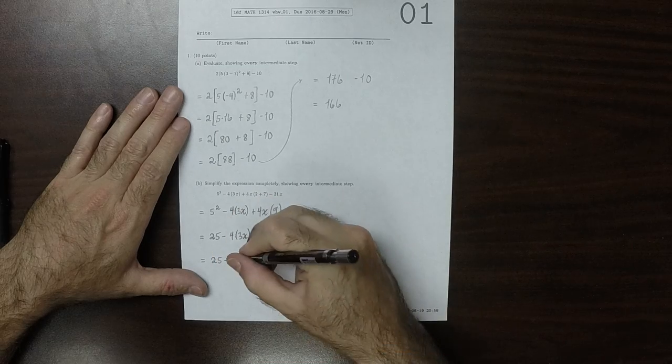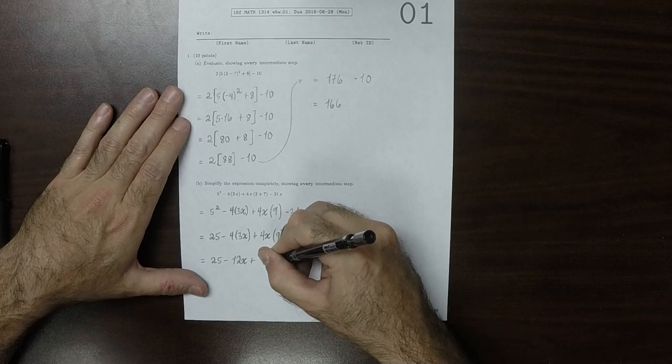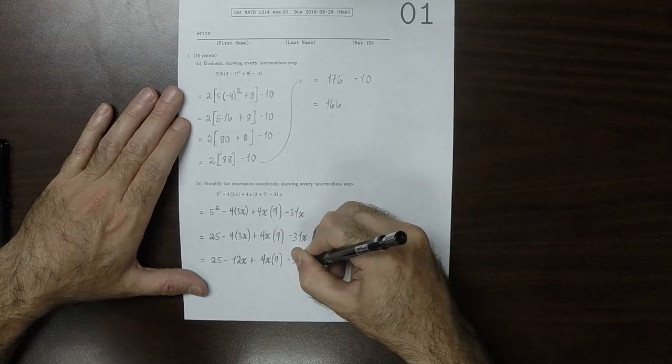So 25 minus 12x plus 4x times 9 minus 31x.